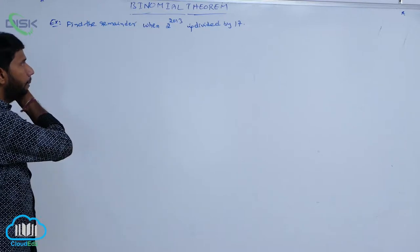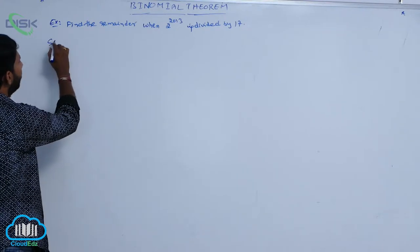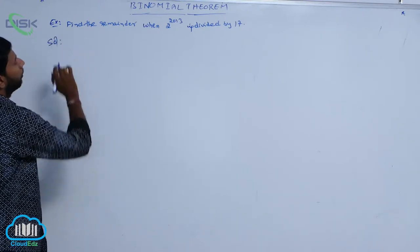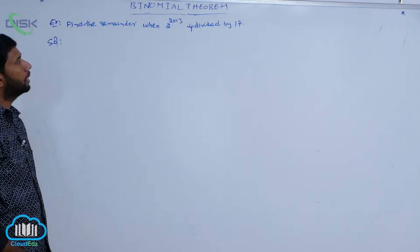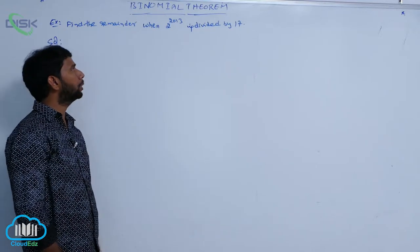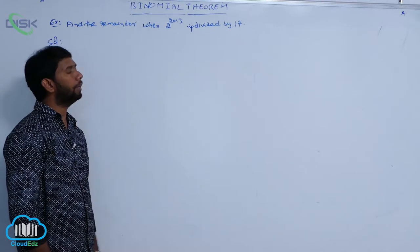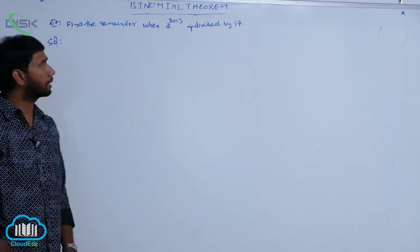Next example: find the remainder when 2 power 2013 is divided by 17. Find the remainder when 2 power 2013 is divided by 17, then its remainder is: